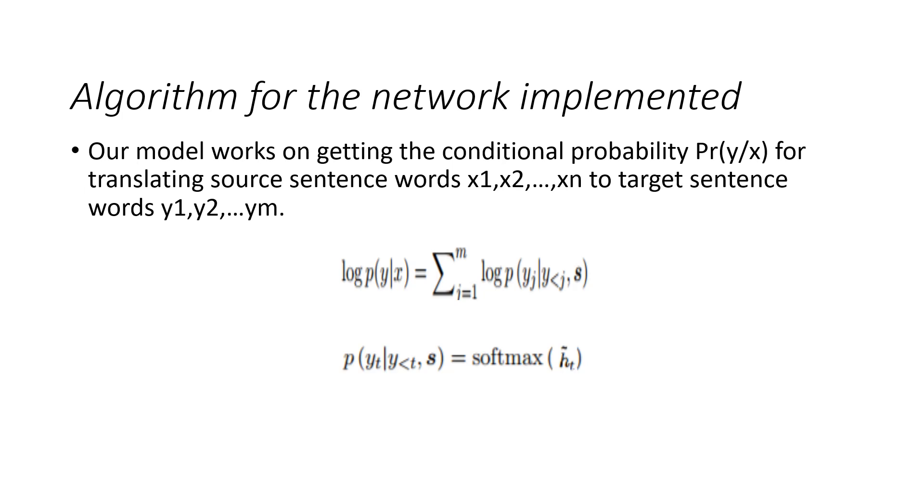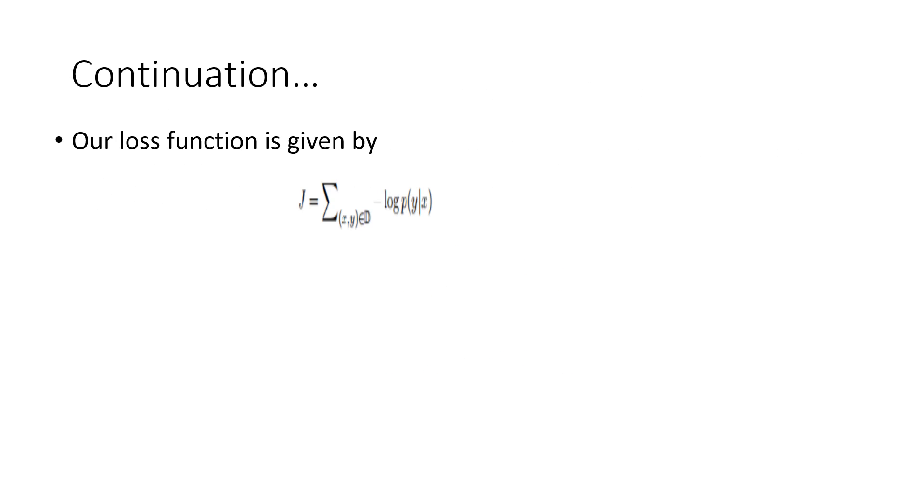Every word in the target sentence that we are going to predict is going to depend on the syntactical nature of the previous words that we have already predicted. And this can be again given by calculating the softmax of the hidden state or what we can call as attentional vector. Our loss function can be calculated by summing up over all the source and target sentences. We can calculate the negative logarithmic probability of predicting a target sentence given a source sentence. Our aim will be to minimize this particular loss function.